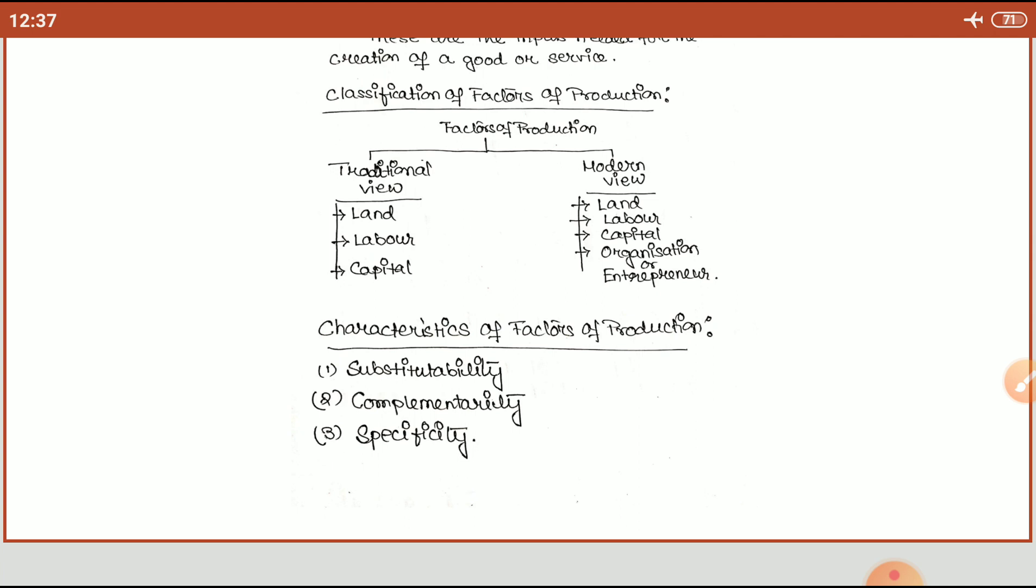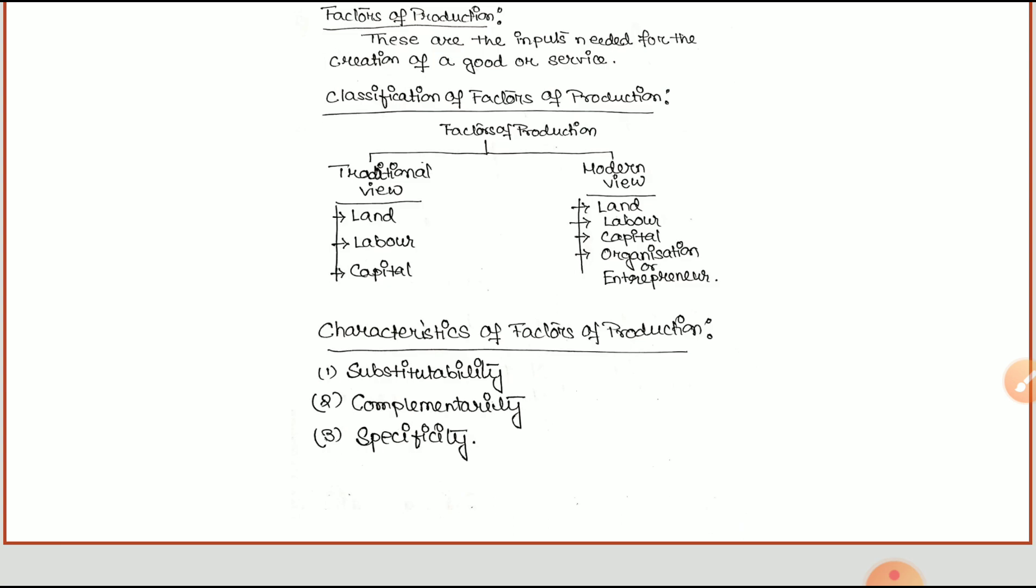Next is specificity. Specificity means some specific feature the factors of production must possess. Suppose land is used for agriculture. But land also has other uses. However, generally when we discuss land, we classify it in terms of agriculture. So land has a specific characteristic that it should be used in agriculture.